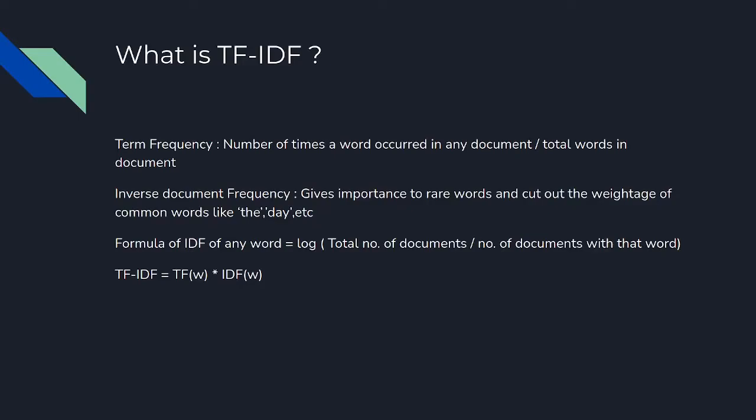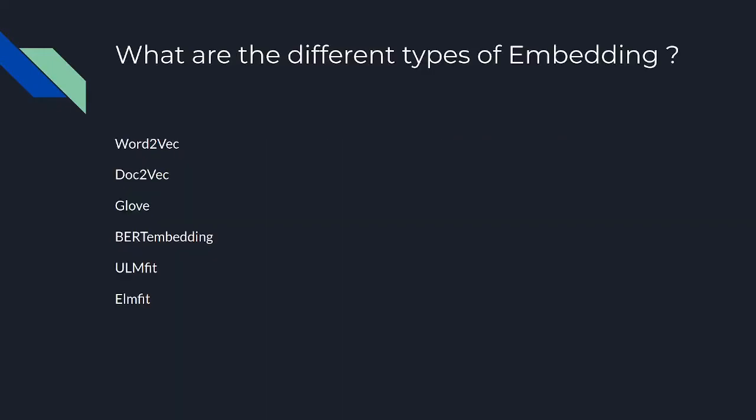Next: what is TF-IDF? TF stands for Term Frequency — the number of times a word occurs in a document divided by the total words in that document. IDF stands for Inverse Document Frequency — it gives importance to rare words and cuts out the noise of common words like 'the', 'a', 'day' etc. The formula for IDF is log of total number of documents divided by the total number of documents containing that word. Multiplying TF and IDF gives us TF-IDF.